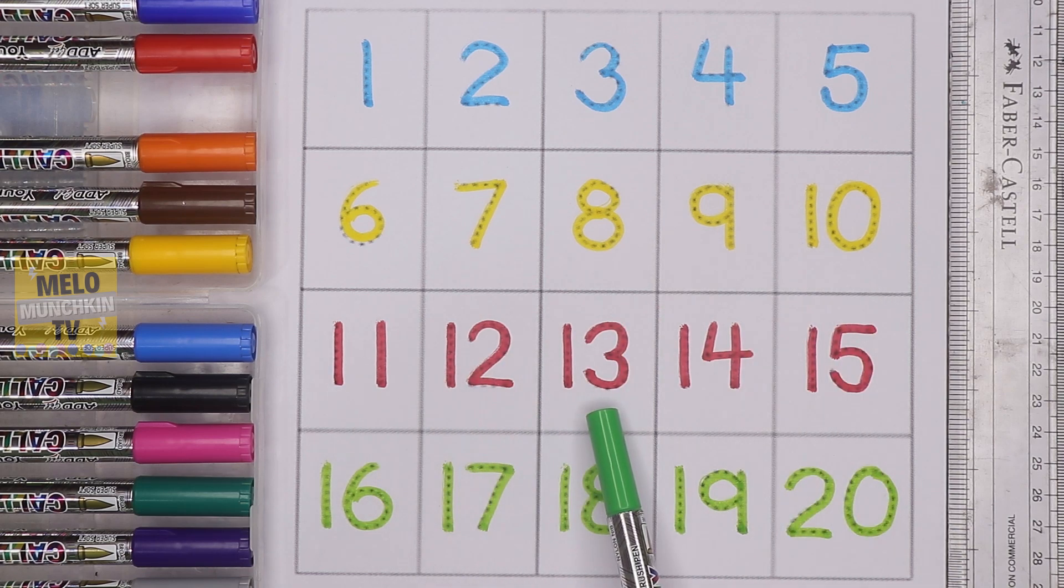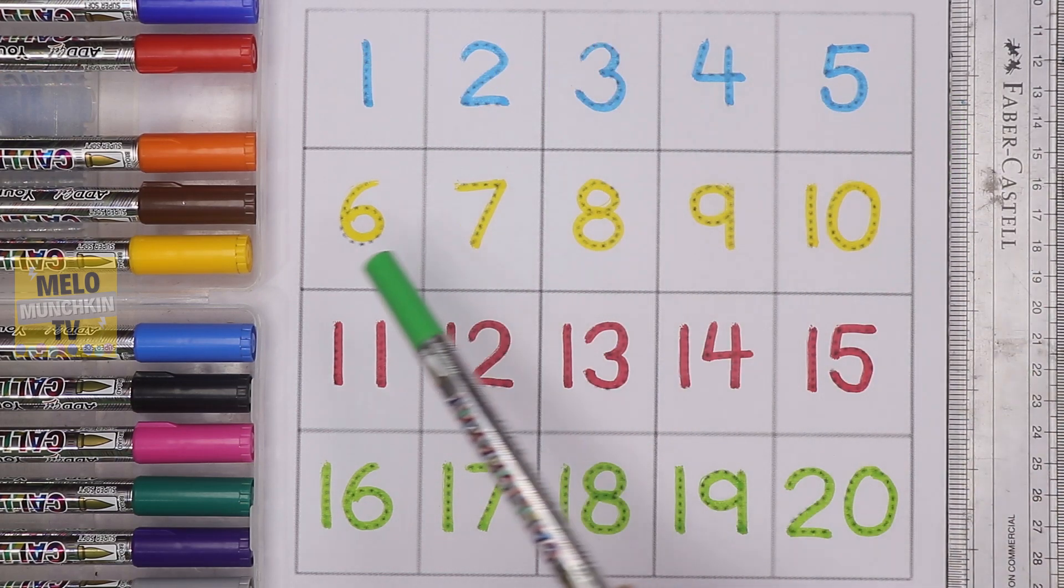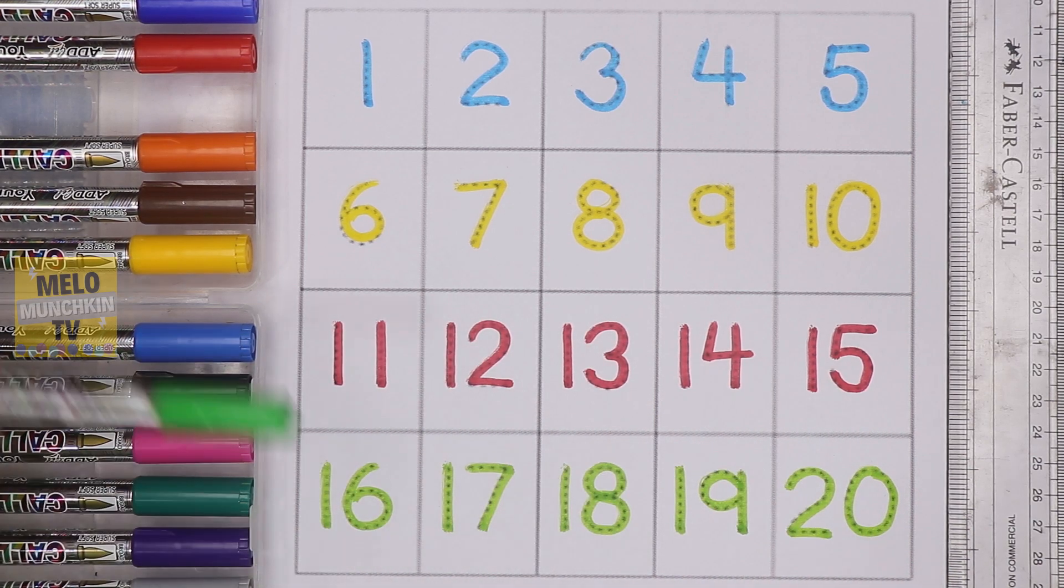Twelve, 13, 14, 15, 16, 17, 18, 19, and 20. What are the colors we have learned? First one is blue color, second yellow color, third red color, and the last one is green color.